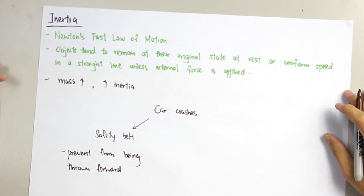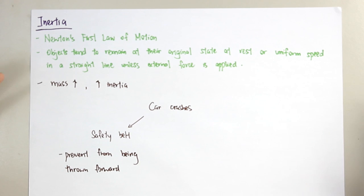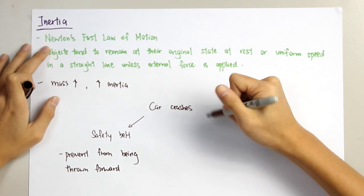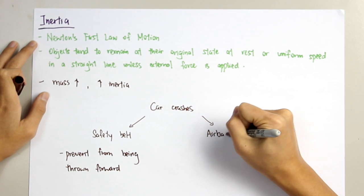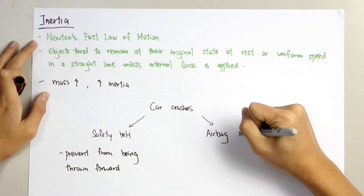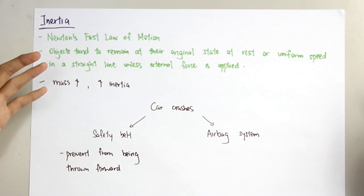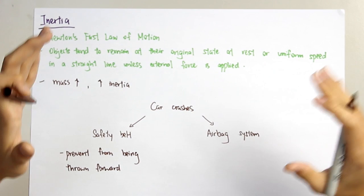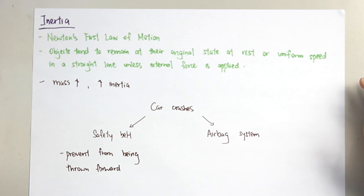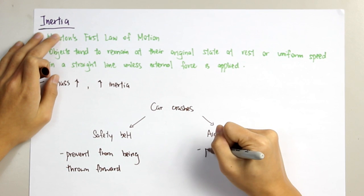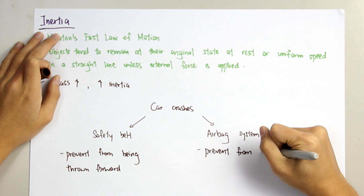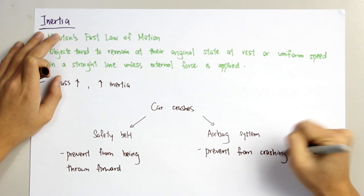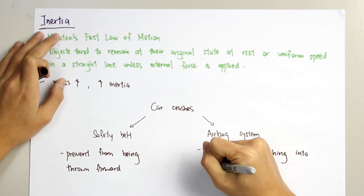Second, the dangerous situation you will face is you hit the dashboard of the car. What can you do to reduce this negative effect? It's suggested you use the airbag system. The airbag system is located in the dashboard or inside the steering of your car. During the impact, the airbag will pop out and then it prevents you from crashing into the dashboard which will cause you serious injury.